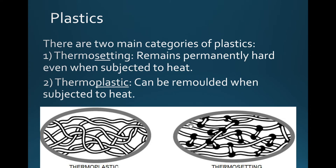There are two main categories of plastics. Thermosetting plastics remain permanently hard when subjected to heat — once you've molded the plastic, you can't change its shape. Thermoplastic, on the other hand, can be remolded when heated — it can be melted and reshaped. That is why some plastics don't go in the microwave: they're thermoplastics and will melt. If you look at the structure of a thermoplastic versus thermosetting, the thermosetting one is more complex, which is why its shape cannot be changed even when heated.